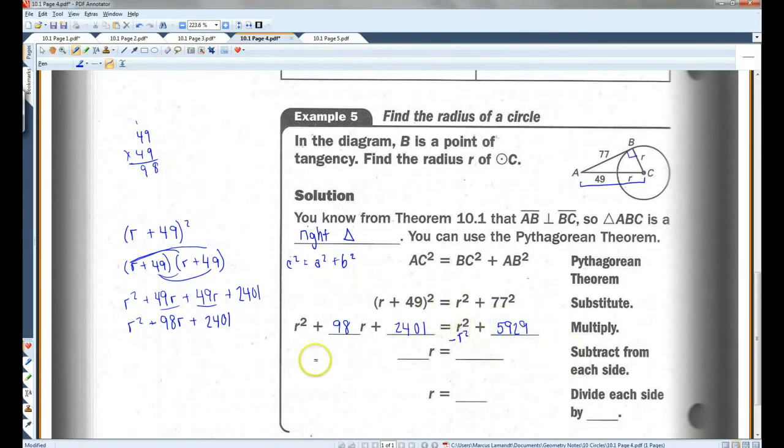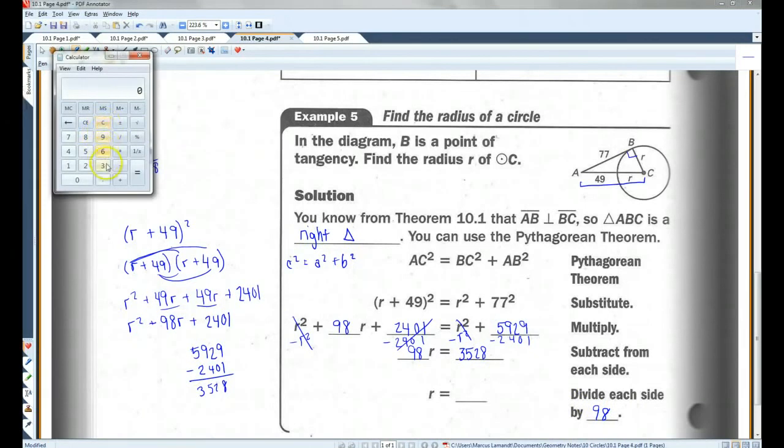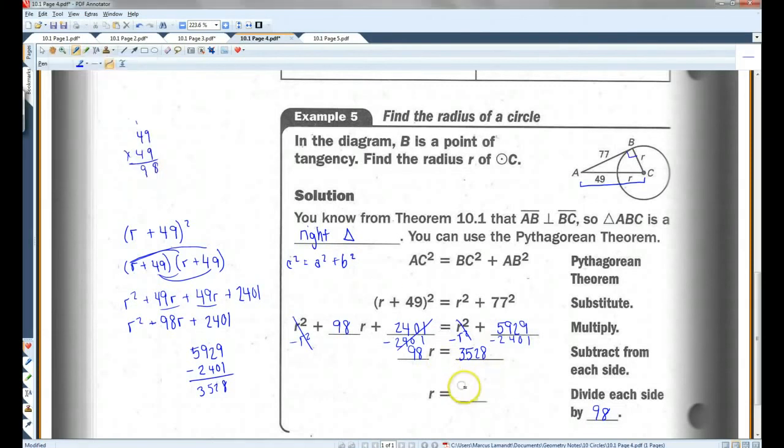I'm going to subtract R squared from both sides. That'll cancel that out. I'm also going to subtract 2401 from both sides. That'll cancel this out. So I'm left with 98R equals 3528. So now I'm going to divide each side by 98. Let's pull out the calculator. 3528 divided by 98, 36. So the radius is 36.